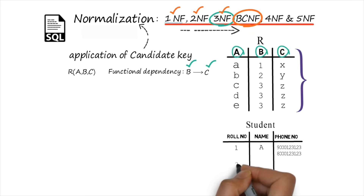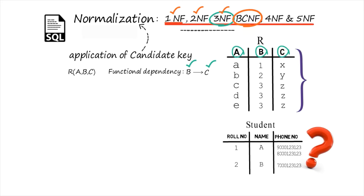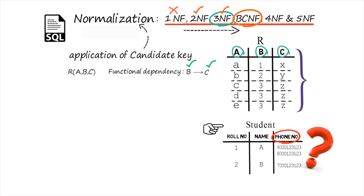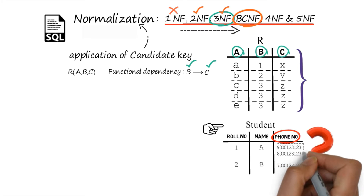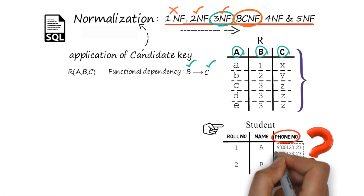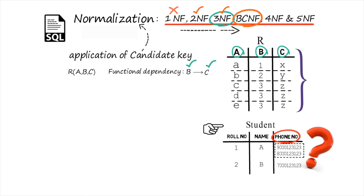Say roll number 1 has two phone numbers — name is A and this person has two phone numbers. Roll number 2 has one phone number. Is this table in 1NF? The answer is no, because under the phone number attribute you have two values together — that is a non-atomic value. Atomic value means in each and every row under each and every column we will have only single values. It is not allowed in database management systems for an attribute to have more than one value as one unit. If the atomic value condition is satisfied, the table is in first normal form.